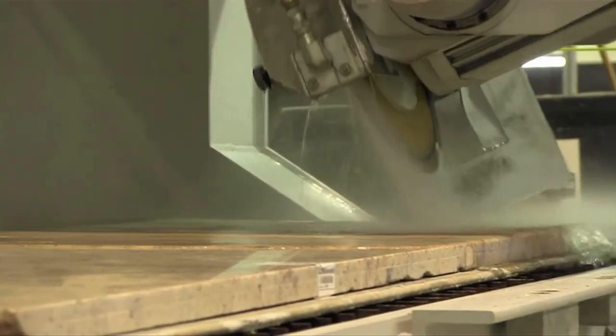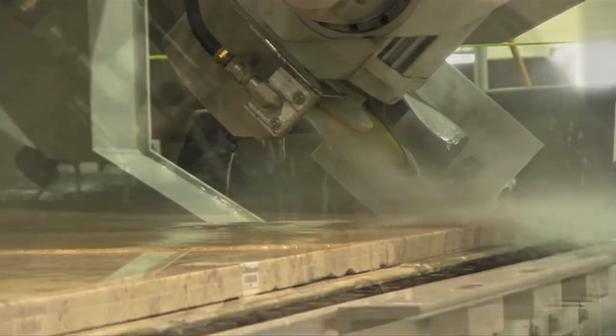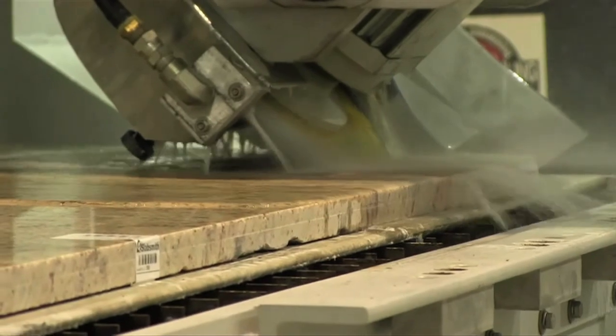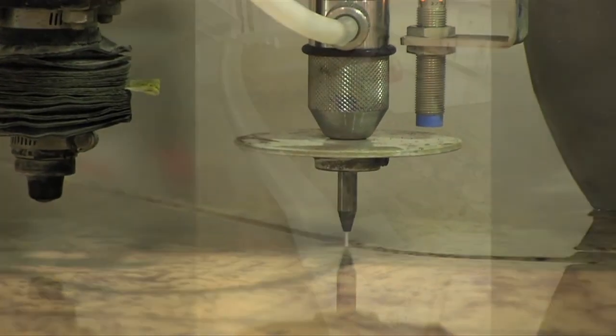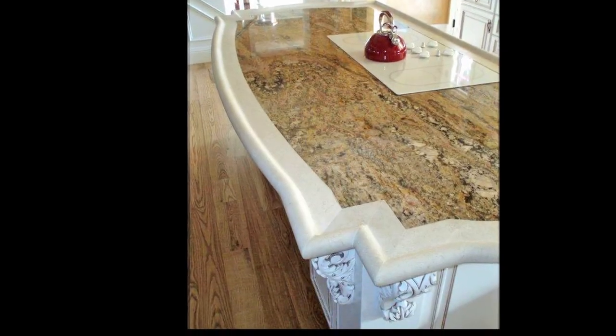First, your stone will be cut on our Fusion CNC saw water jet. The automated program allows the Fusion to switch from cutting with the blade to piercing with the water jet whenever required.